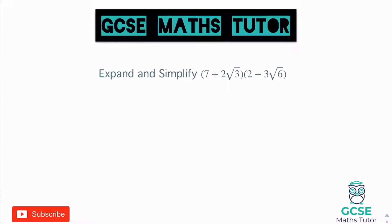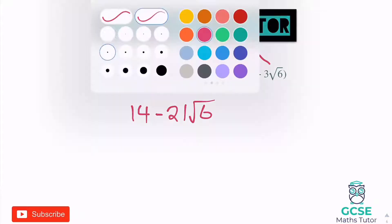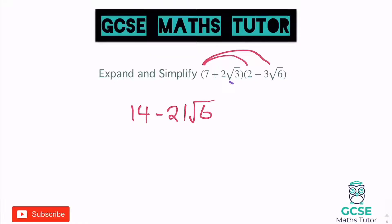So expanding this: 7 times 2 is 14. 7 times negative 3 root 6 is negative 21 root 6. 2 root 3 times 2 — that's positive 4 root 3. And 2 root 3 times negative 3 root 6: 2 times 3 is 6, positive times negative so negative 6, and root 3 times root 6 gives us root 18.